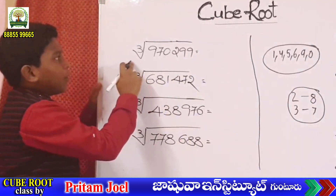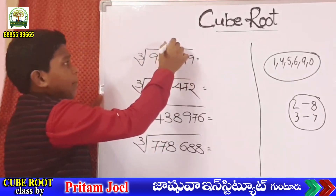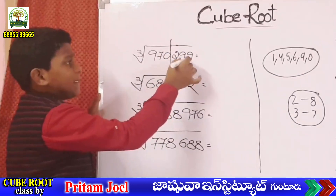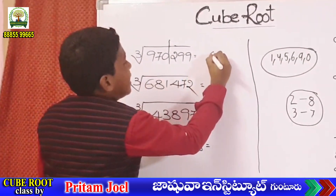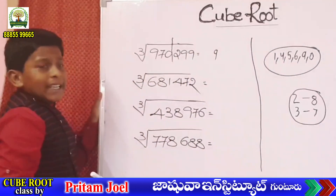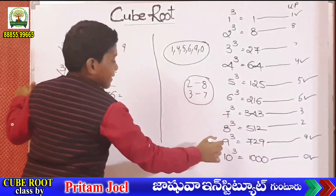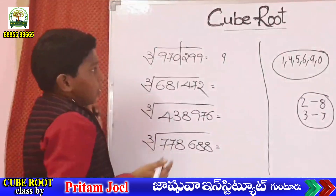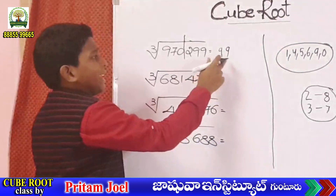Cube root of 970299: remove the last 3 digits. The unit place is 9, so the answer unit place is also 9. The remaining number is 970. 970 is bigger than 729, which means 9 cube. Cube root cancels, so 9. This answer is 99.